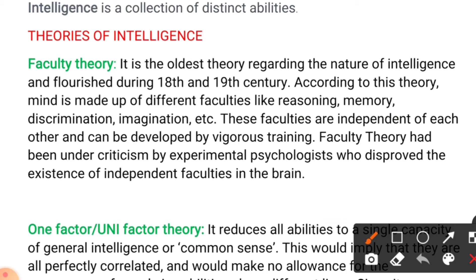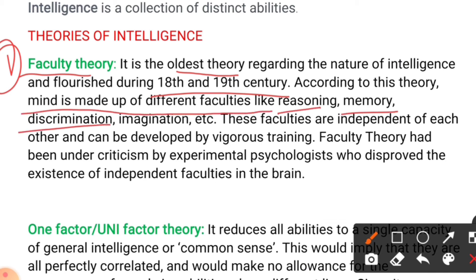The first theory is the faculty theory, which is the oldest theory regarding the nature of intelligence, flourishing during the 18th to 19th century. According to this theory, the mind is made up of different faculties like reasoning, memory, discrimination, and imagination. These faculties are independent of each other and can be developed by vigorous training. Faculty theory has been under criticism by experimental psychologists who discovered the existence of independent faculties in the brain.